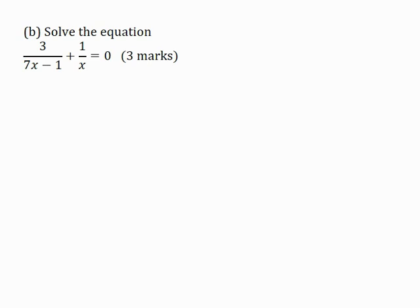Part B: Solve the equation 3 over (7x minus 1) plus 1 over x is equal to 0, for 3 marks.